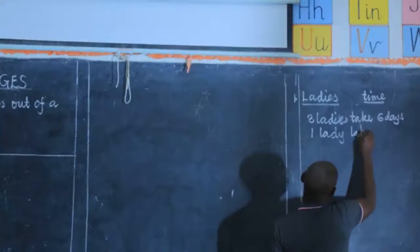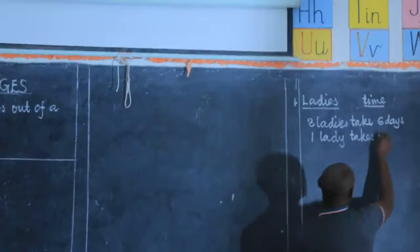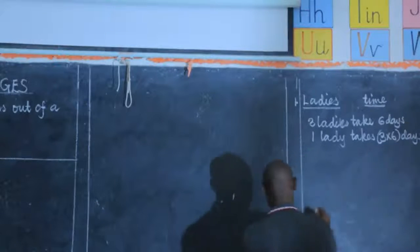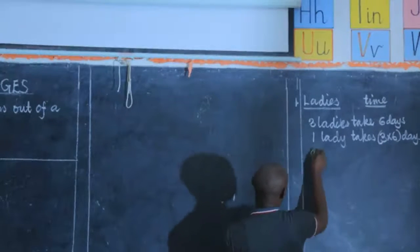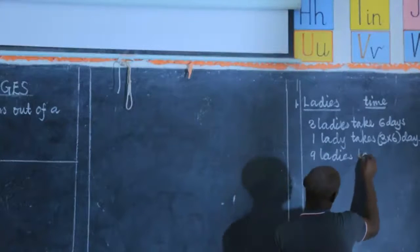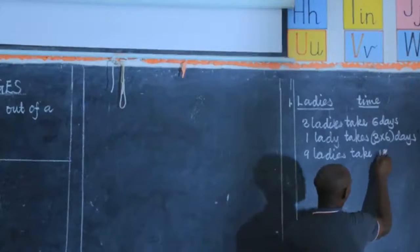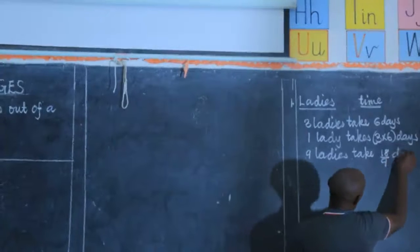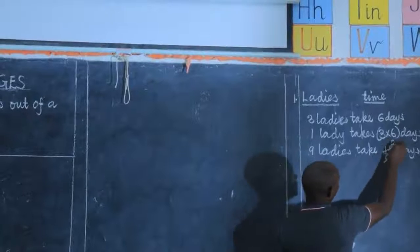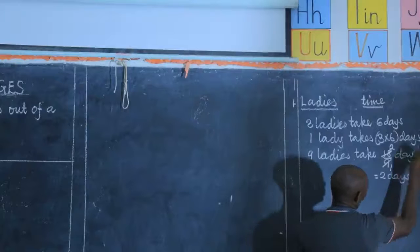Since we have one lady, she will take more time — that is three times six days. What about when we have nine ladies? Nine ladies will take the product, which is 18, then you divide by nine. Divide by nine once, divide by nine is two. So when there are nine ladies, they are going to take two days.